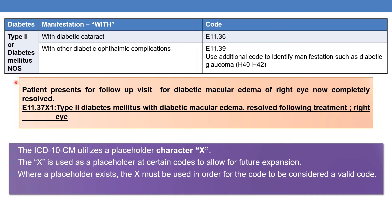Let us see an example. A patient presents for a follow-up visit for diabetic macular edema of the right eye, now completely resolved. You need to code type 2 diabetes mellitus NOS with diabetic macular edema resolved following treatment, under subcategory E11.37. Additionally, it requires a 7th character to indicate laterality. Here the laterality is right eye, so 7th character 1 — indicating right eye.